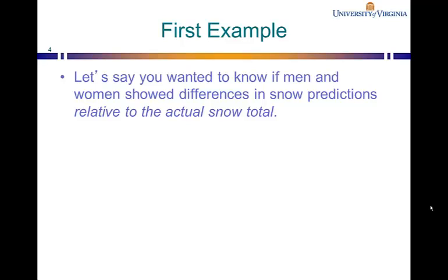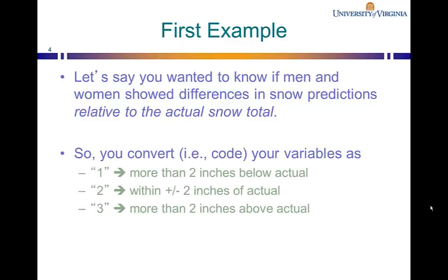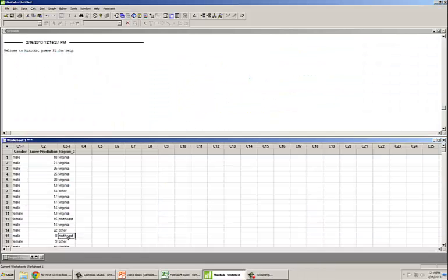Assuming the actual snowfall was 15 inches, we recode snow predictions as follows: if an individual guessed more than 2 inches below the actual snowfall, we recode the value as 1; if an individual was within plus or minus 2 inches of the actual snowfall, we recode it as 2; and if the individual predicted 2 or more inches above the actual snowfall, we recode it as 3. Let me show you how this can be done in Minitab.